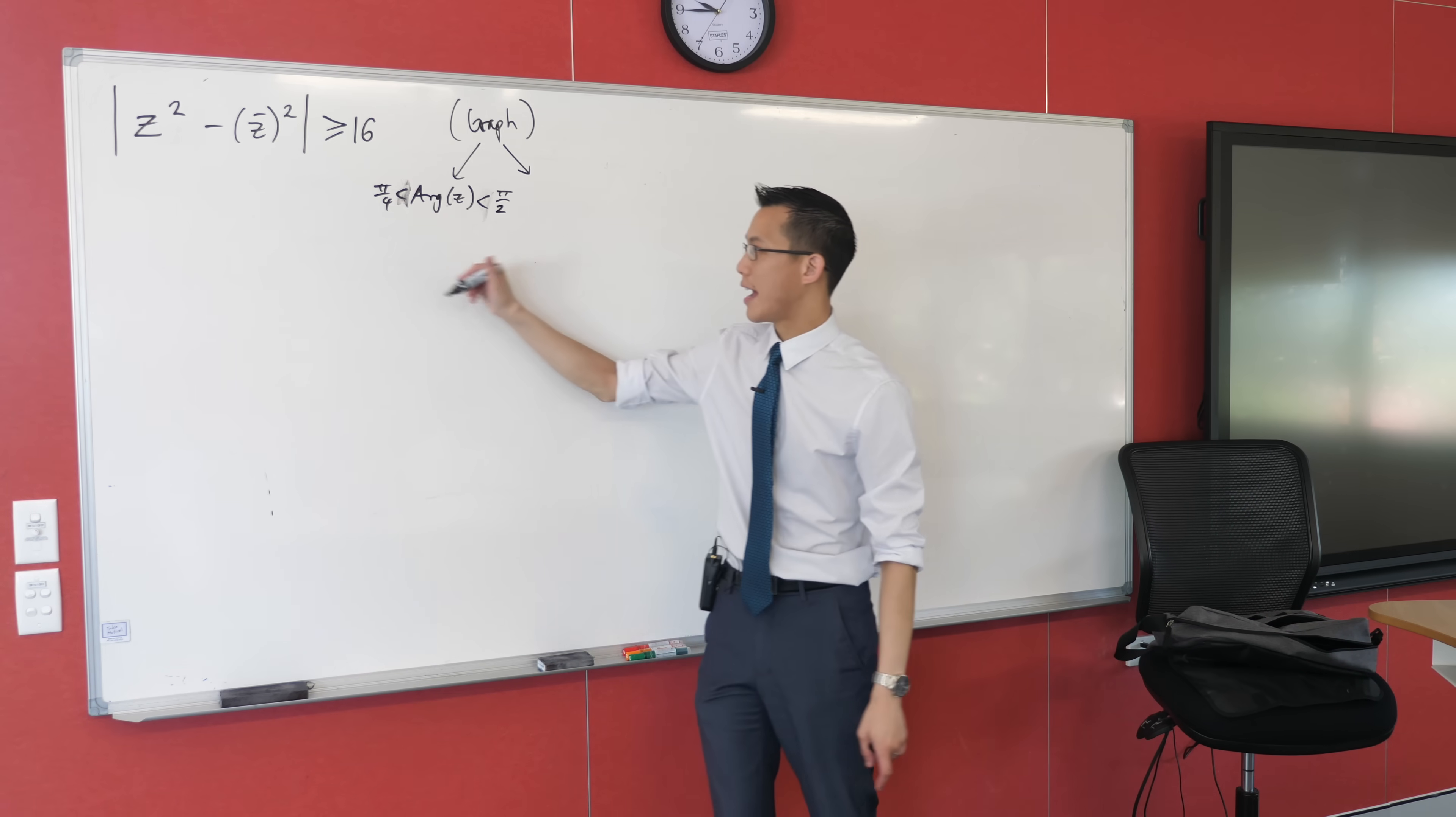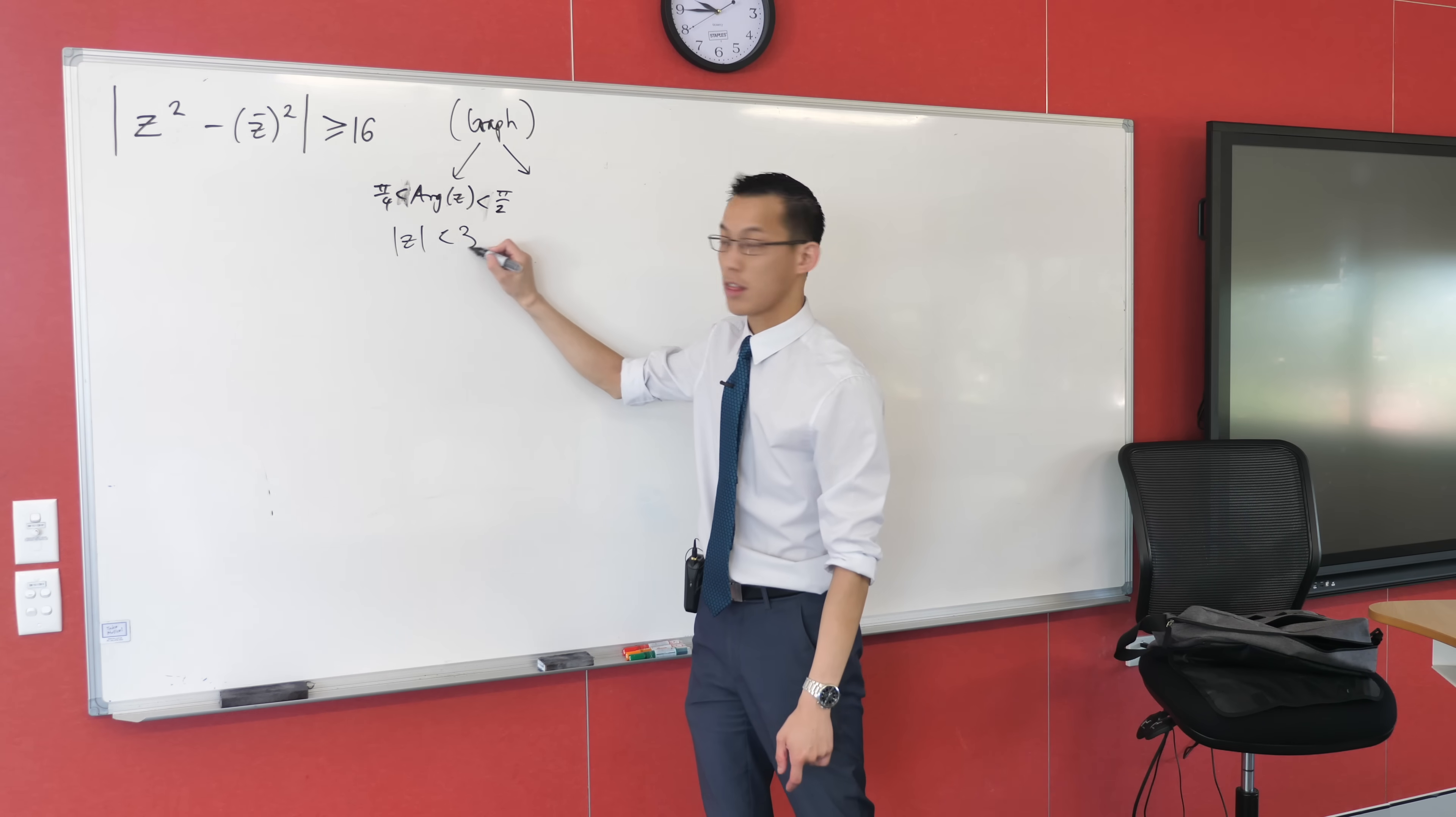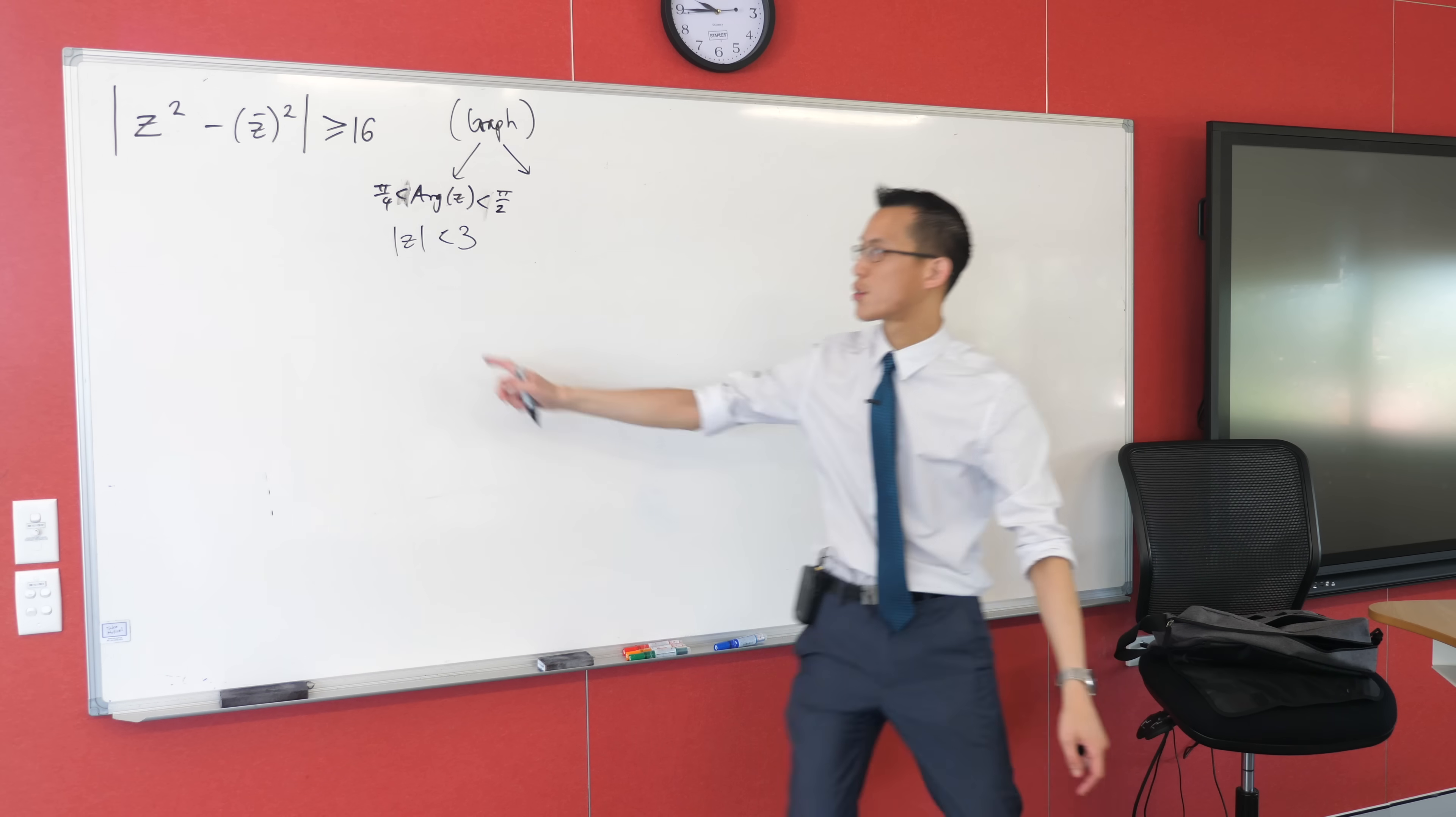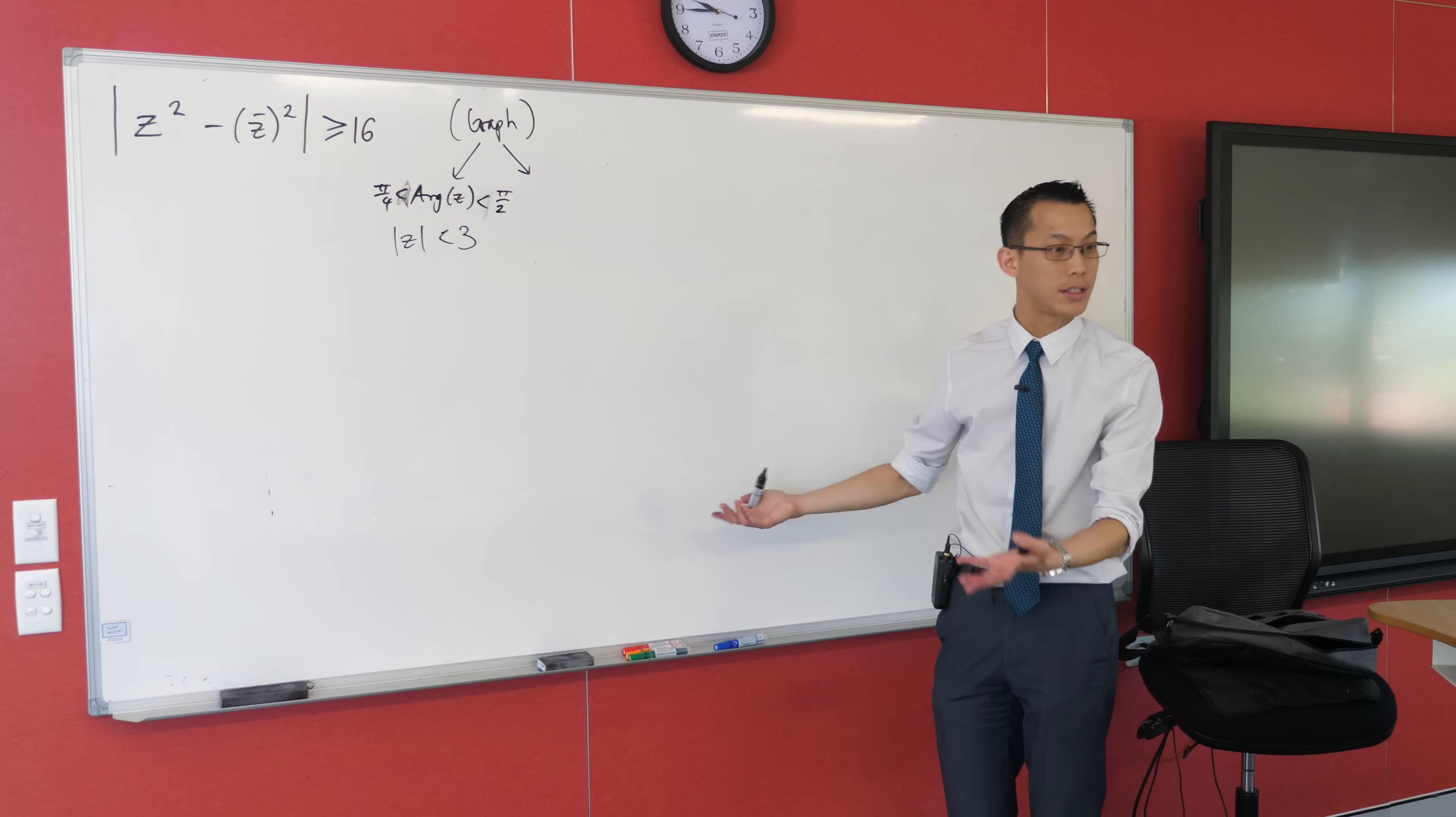I could say, how about mod z is just going to be less than 3. So we're going to get what shape out of that? That's a circle, because we're just looking for the distance from the origin and make sure it's less than whatever is set, right?